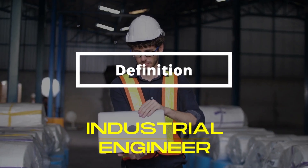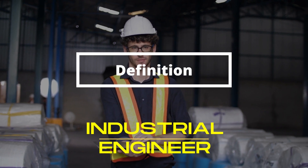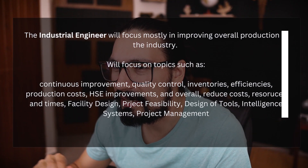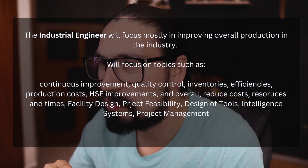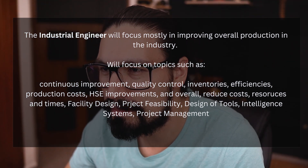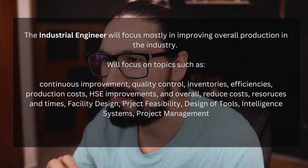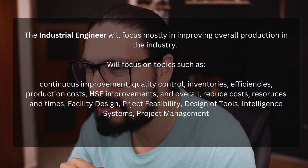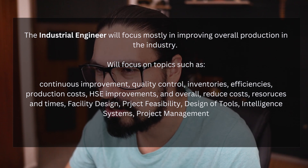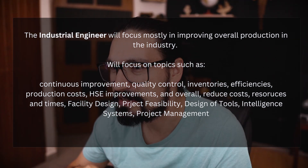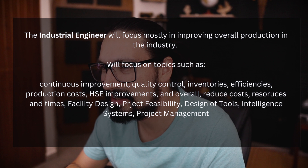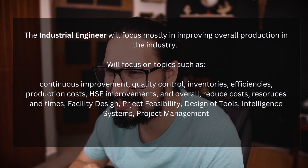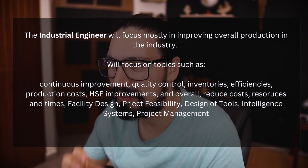On the other hand, the industrial engineer focuses mostly on improving overall production. Their topics include continuous improvement, quality control, inventories, efficiencies, production costs, health, safety, and environment improvements, overall cost and resource reduction, facility design, project feasibility, design of tools, intelligent systems, and project management.